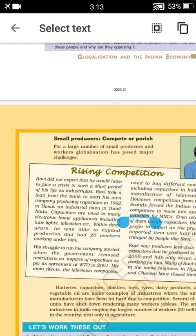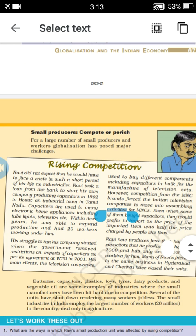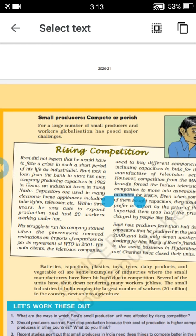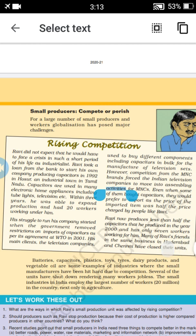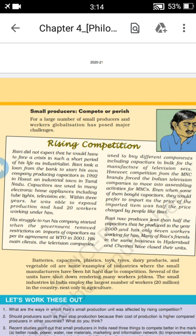Welcome to the new segment of Grade 10th. We are discussing Economics, specifically the chapter on Globalization and the Indian Economy. Today's subtopic is 'Small Producers Compete or Perish' and 'Competition and Uncertain Employment.' With the help of examples, we can understand these concepts.